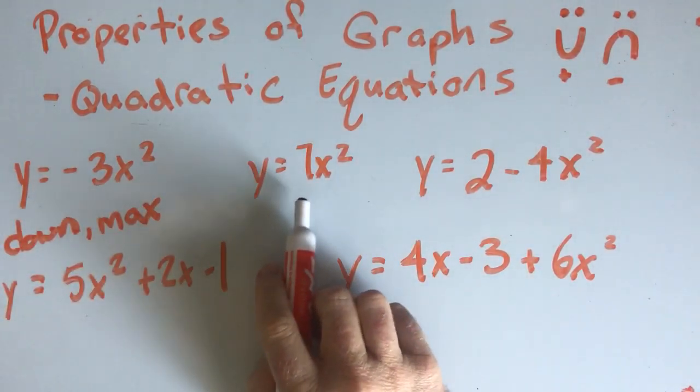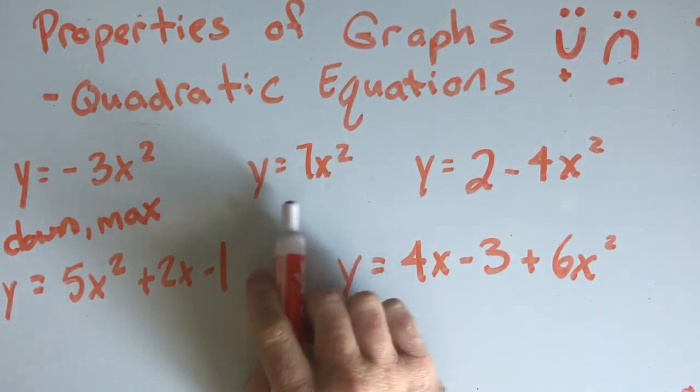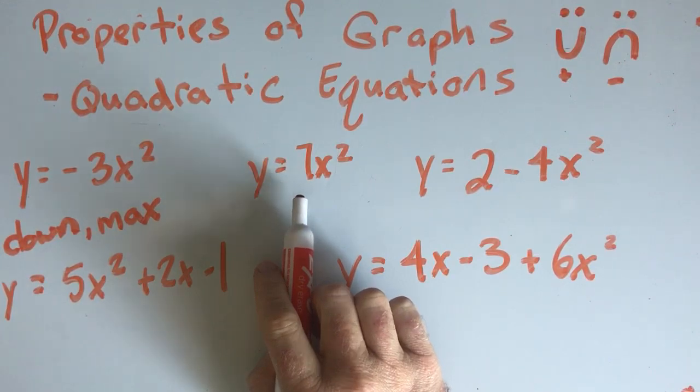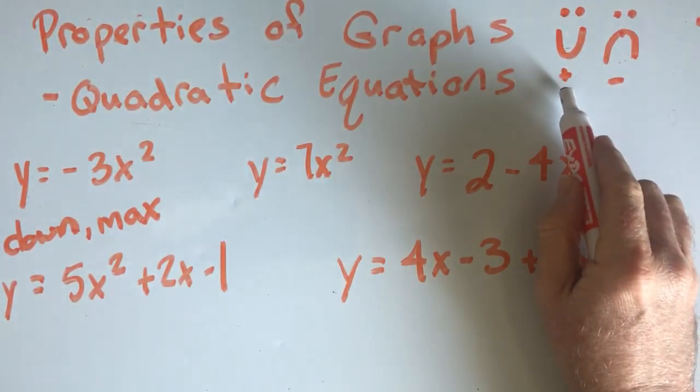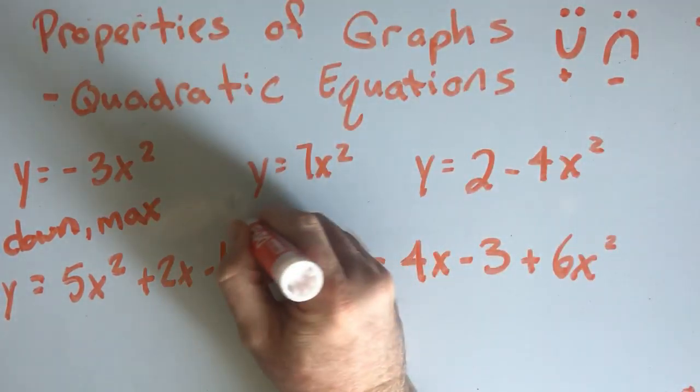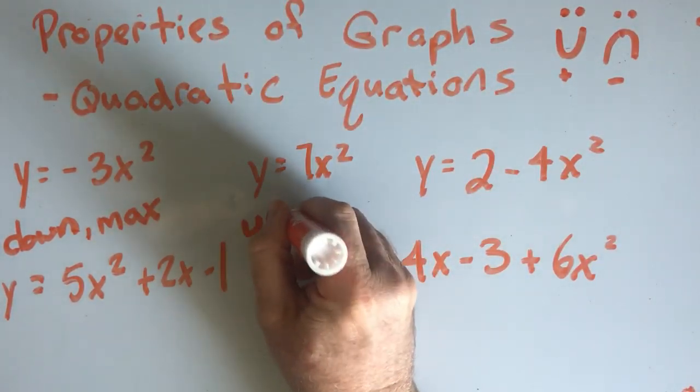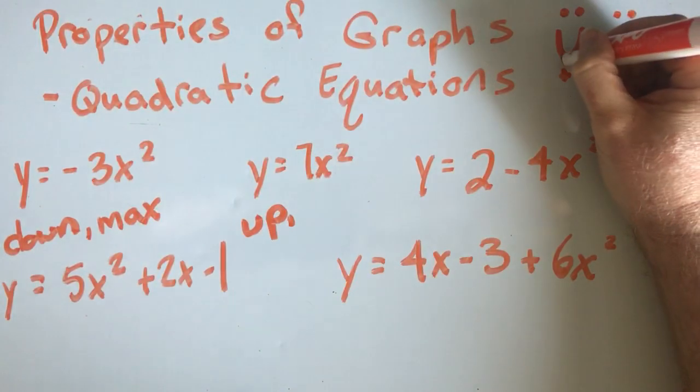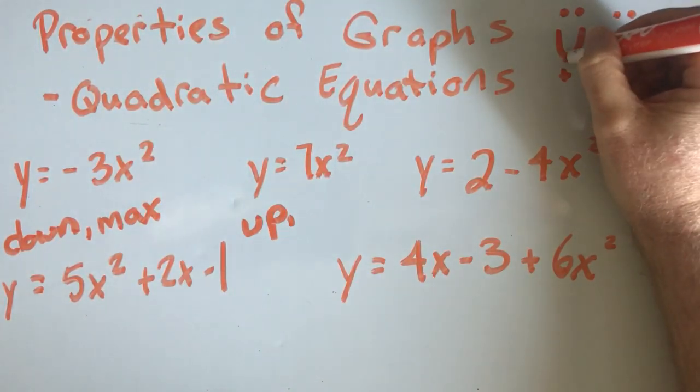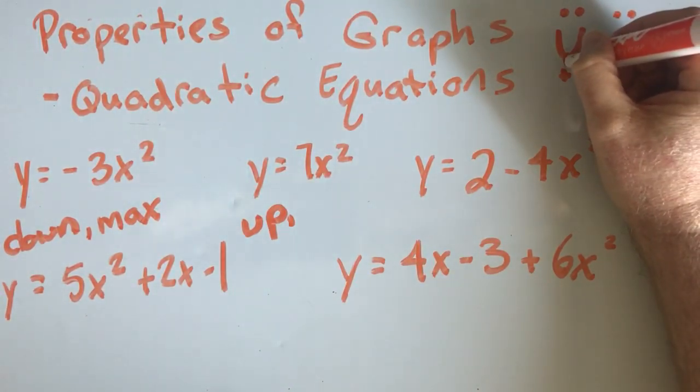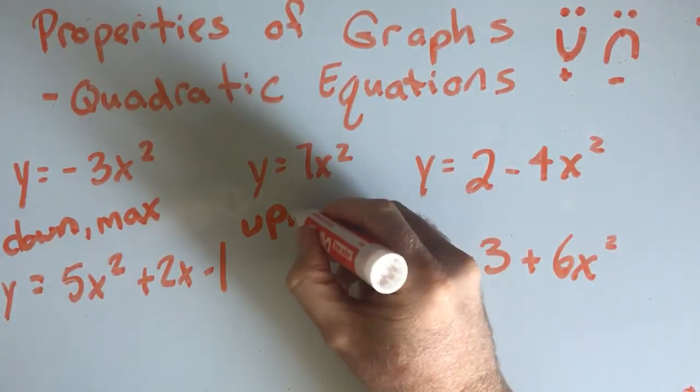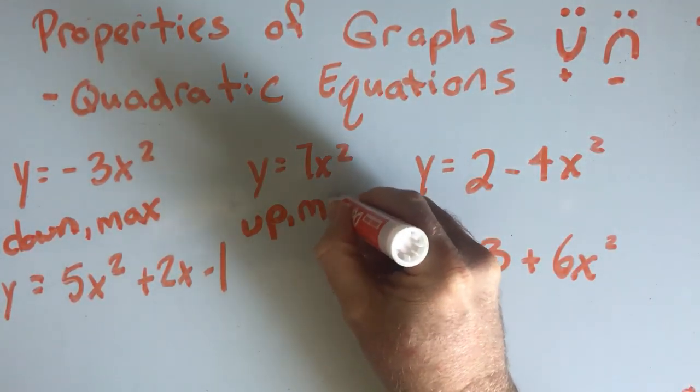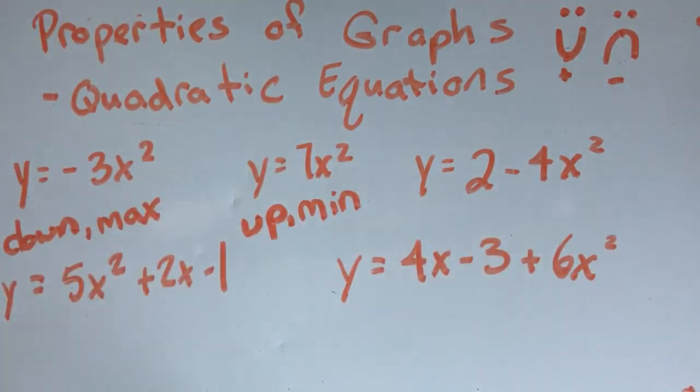Let's look over here. The coefficient of the x squared here is seven. Positive seven. So it is a positive and therefore it opens upward. So it opens up. And the bottom right here, that's the minimum that it's going to get, right? Because it can go higher. There's no max on this. So this would be a minimum.